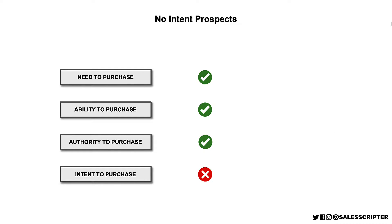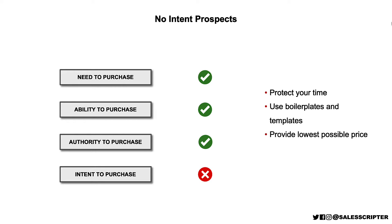If the prospect is going to purchase something but is leaning towards someone else, protect your time. Don't spend hours or a whole week working on your proposal. If they ask for a proposal, use boilerplate templates, minimizing the time you spend. With these prospects, you might want to jump to your lowest possible price and give it to them — you know they're leaning towards someone else, so give them the lowest price and see if you can steal it away. And of course, with these prospects as well as all others, you might want to consider potentially just walking away from the opportunity.